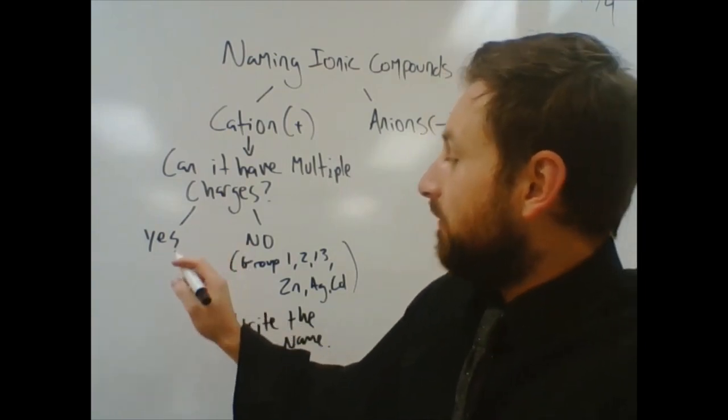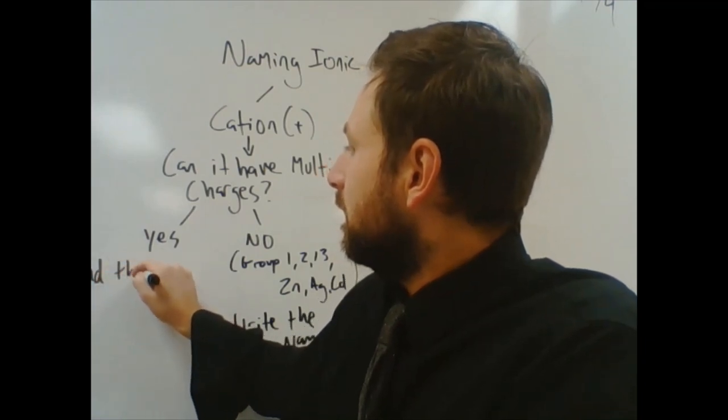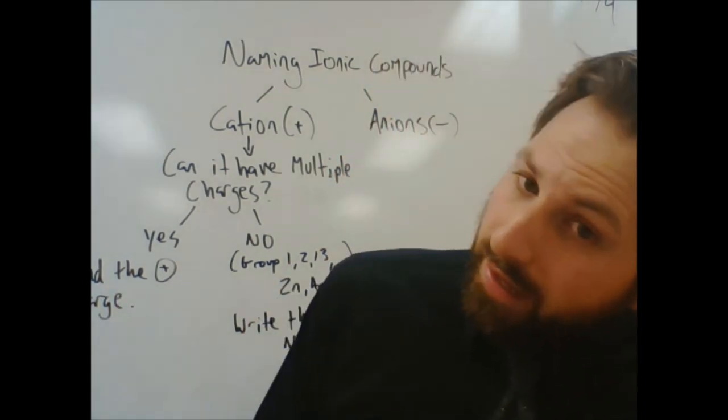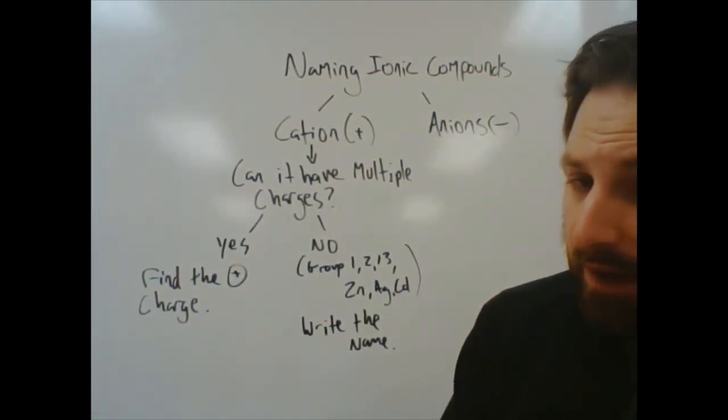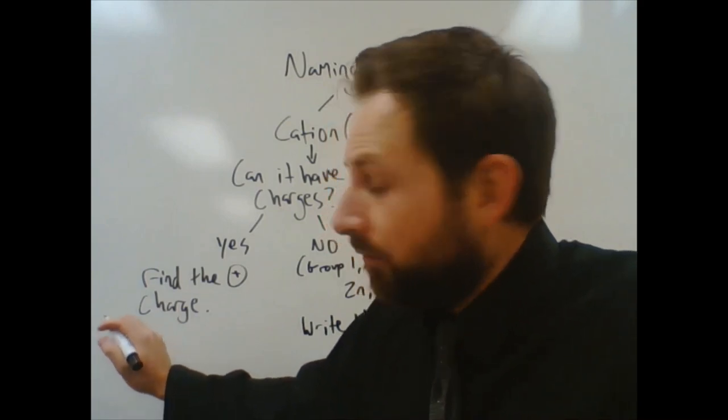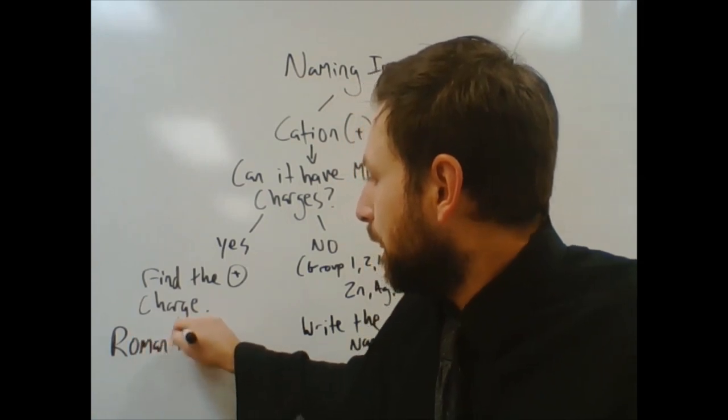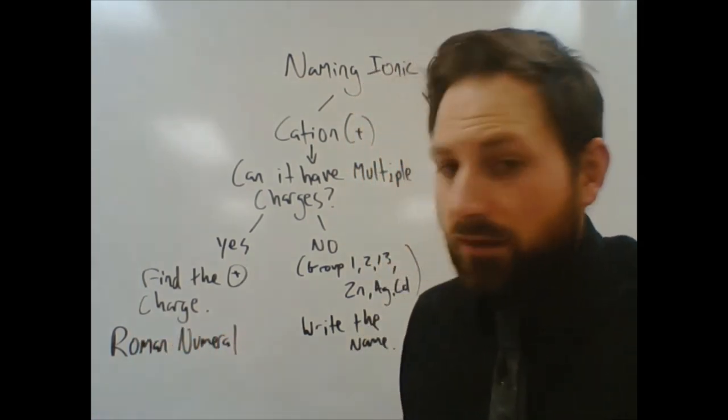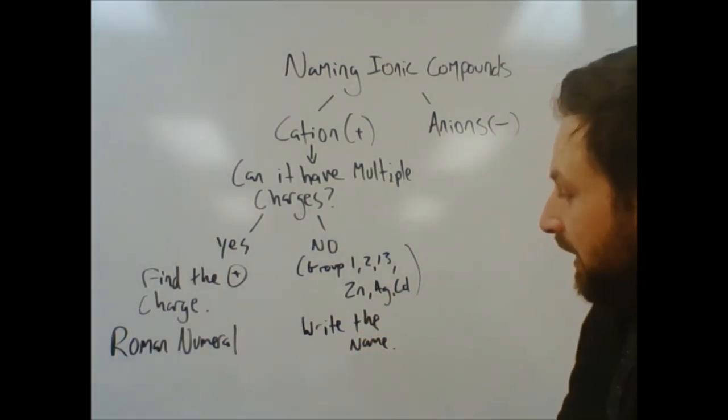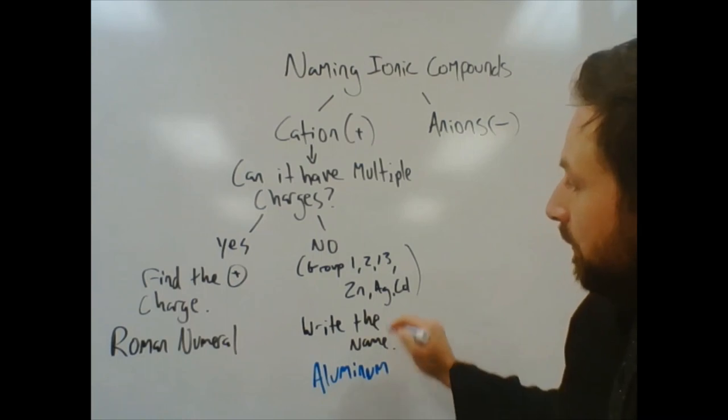If the answer is yes, it can have multiple charges. You have to find the positive charge. You do that by, you find the positive charge by looking at the negative charge and figuring it out. And then you're going to write the name and include a Roman numeral. So, what I mean by that, over here, no, write the name. An example would be like, you just write down aluminum. Aluminum comes from group 13.